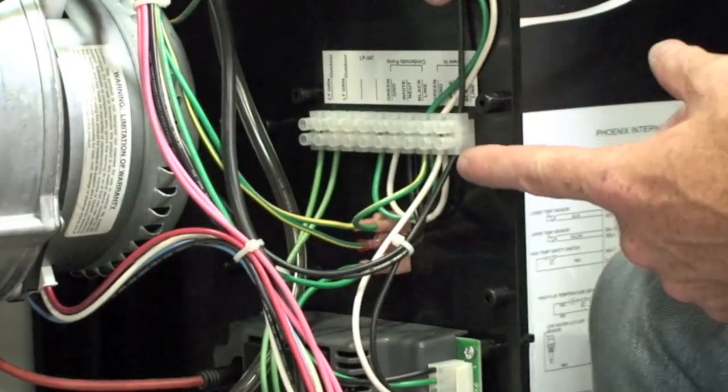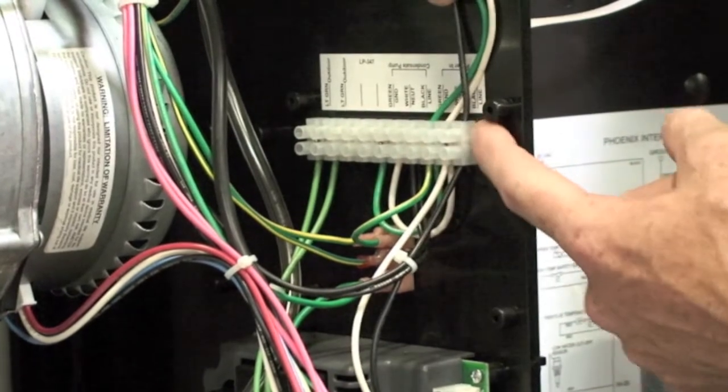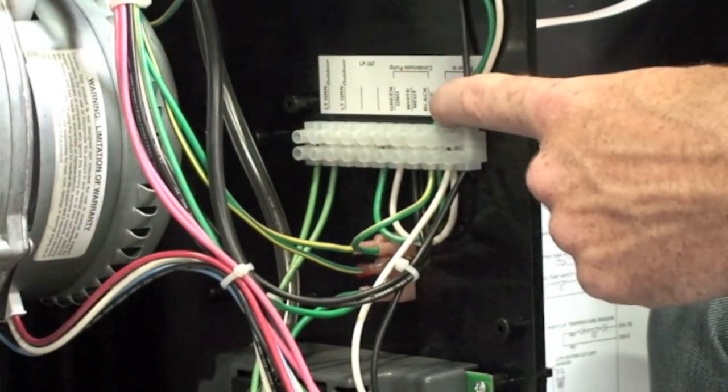Here we have our terminal strip for ease of wiring, so we can bring our wires through the side of the cabinet. We have them clearly labeled: hot, neutral, and ground.